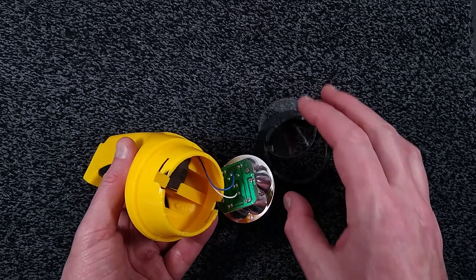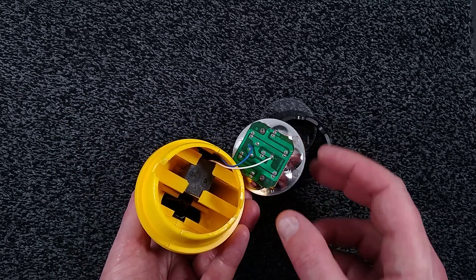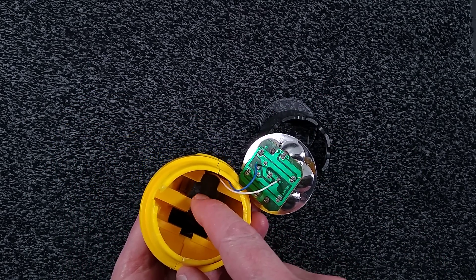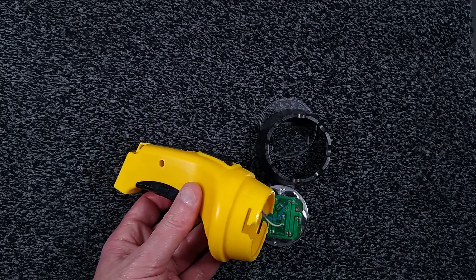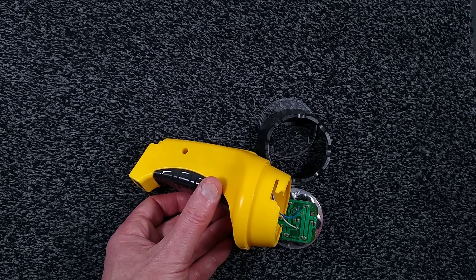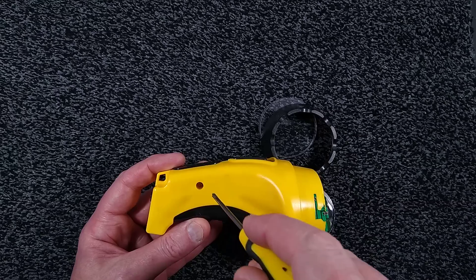So the end bayonet caps off and we can see the circuit board for the LEDs and what looks suspiciously like a lead acid battery in here. I need a screwdriver, one moment please. I have a screwdriver.